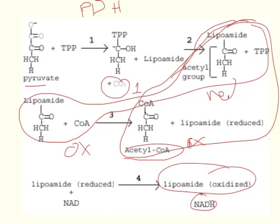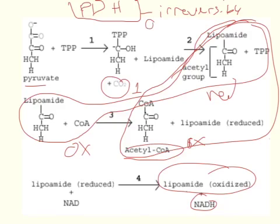Now you remember that pyruvate dehydrogenase under physiological conditions is irreversible. And the chemistry behind that is that typically whenever there's an oxidation going on, oxidations are very hard to reverse directly. And so you have to go through another mechanism to reverse this reaction.